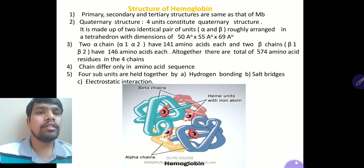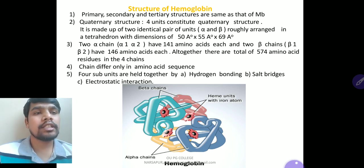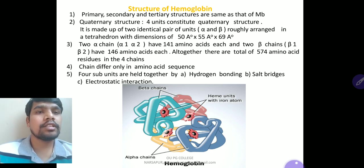Chains differ only in amino acid sequence. The four subunits are held together by hydrogen bonding, salt bridges, and electrostatic interactions. The structure consists of 2 beta chains and 2 alpha chains, with heme units each containing one iron atom.